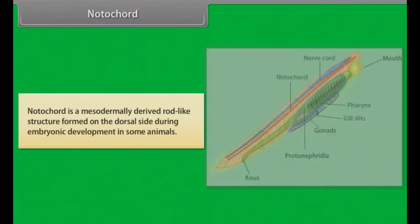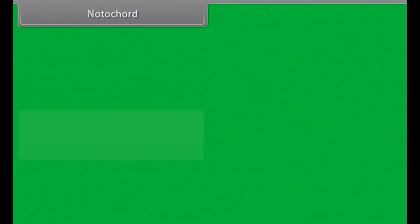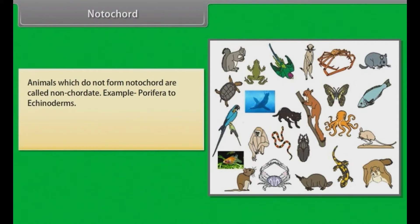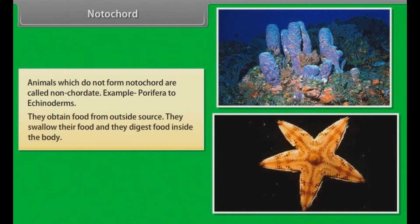Notochord. Notochord is a mesodermally derived rod-like structure formed on the dorsal side during embryonic development in some animals. Animals with notochord are called chordates. Example: Urochordata, cephalochordata and vertebrata. Animals which do not form notochord are called non-chordates. Example: Porifera to echinoderms. They obtain food from outside source. They swallow their food and they digest food inside the body.